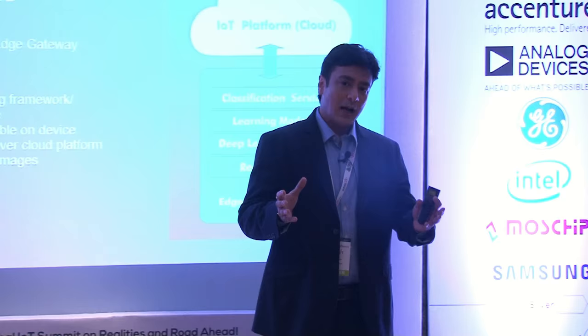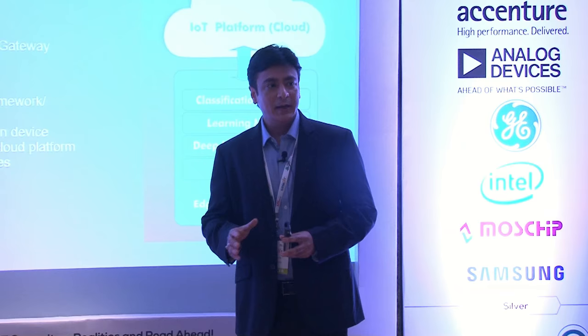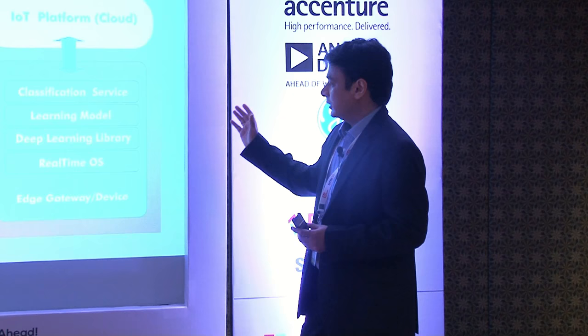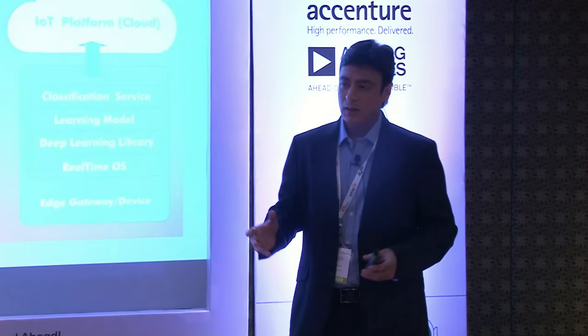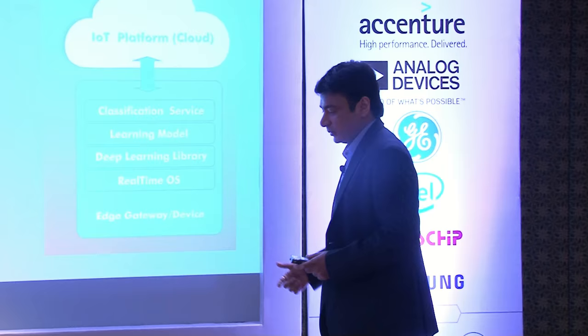From an implementation perspective, you could start off with a convolutional network — build your own or use a pre-trained network. For instance, Google released their TensorFlow model trained on thousands of images; you can use that as a starting point and build on top of it. From a stack perspective you have a deep learning library, an edge gateway, a real-time OS, a deep learning platform, and a learning model. The learning model — in the case of TensorFlow it is a directed object graph — is what you derive from understanding images, and then you use it for classification.